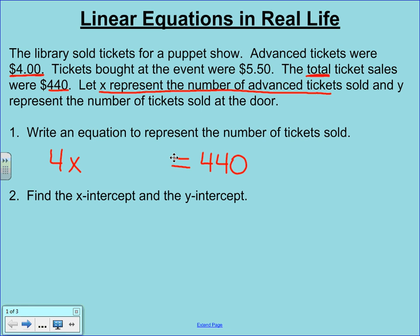And then the $5.50 is what we're charging for tickets at the door. And I don't know how many we sold at the door, but I do know that Y is going to be the number sold at the door. So I'm going to add to that 4X, 5.50Y. So here's my equation.